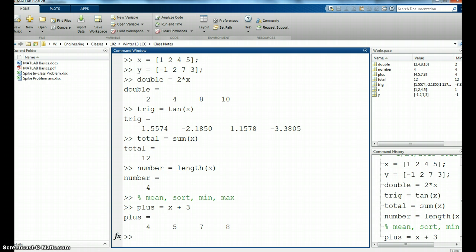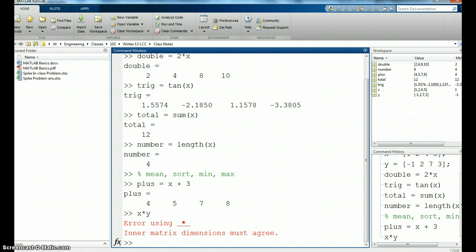Now, if I want to multiply every element in the matrix, say x times y, I would have 1 times the minus 1 element by element. Multiply both the first elements in x and y, both the second elements in x and y. If I just type x times y, it gives me an error. It says the dimensions of the matrix are not in a state that I can actually do matrix multiplication. But that's not really what I want to do. I just want to multiply element by element.